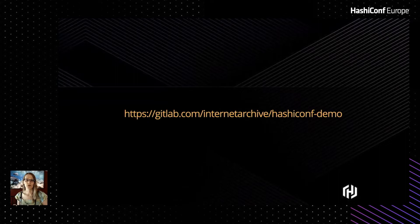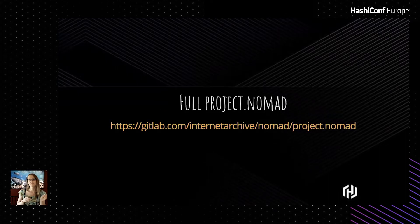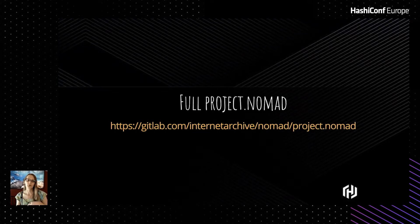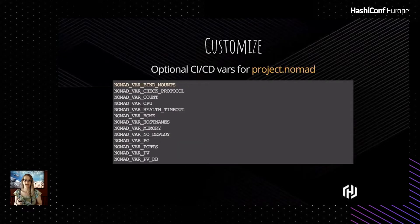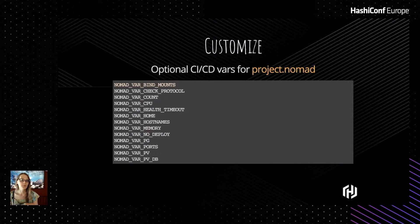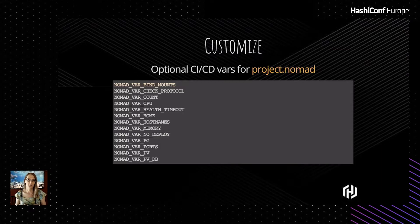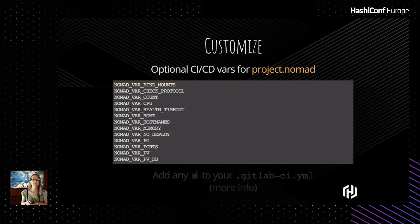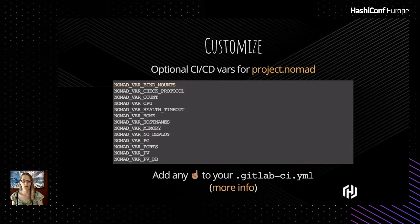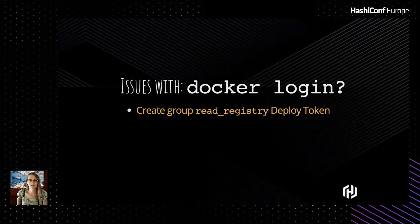If you want to see the whole demo, you can go to the URL shown. For the full Project Nomad with all the goodies and customization options — or if you want to copy it — it's at the link shown. If you want to customize things like a custom hostname or change the deployment count (it deploys one by default, but you could deploy ten and have them all automatically load balanced), you can use nomad_var_count, nomad_var_hostnames, and similar variables. Just add any of these to your .gitlab-ci.yml as variables up at the top and they'll customize your setup.